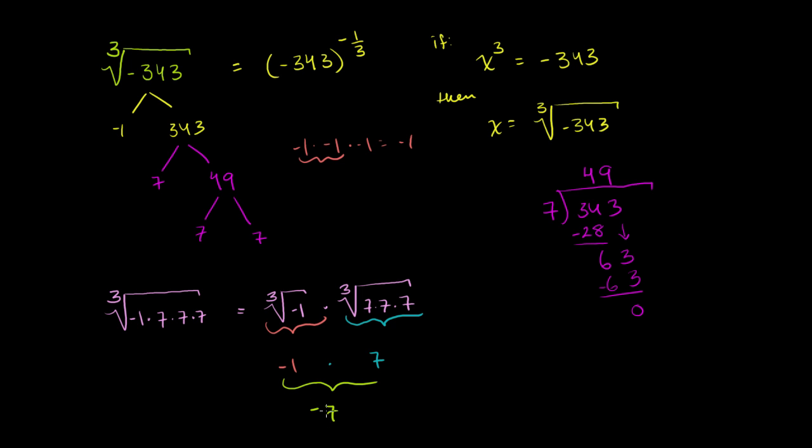And you can verify for yourself. You take negative 7, multiply it by itself 3 times. The negative part, you could view it as negative 1 to the third power, will end up with a negative. And then the 7 to the third power will give you the 343.